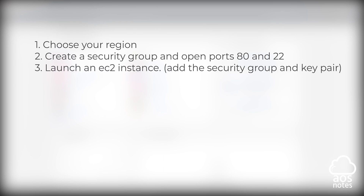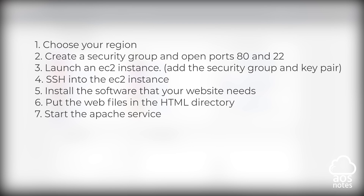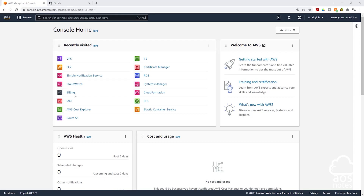First, we are going to choose the region where we will launch our EC2 instance. Then we will create a security group and open port 80 and port 22. Next, we will launch an EC2 instance and make sure we add the security group and the key pair. Then we are going to SSH into the EC2 instance and install the necessary software that our website needs to run. Once we've done that, we will put our web files in the HTML directory on our EC2 instance, and the last thing we are going to do is start the Apache service. So to start, let's go to the management console.